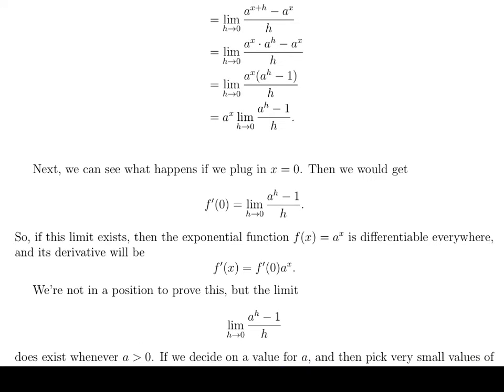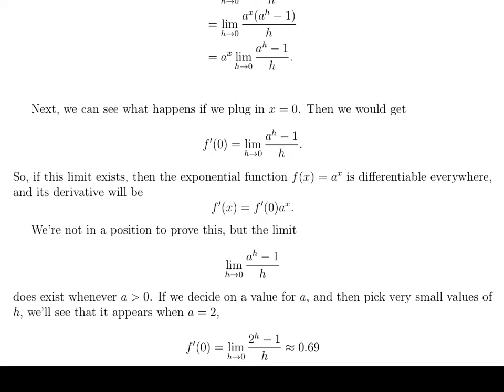Now we're actually not in a position to prove this, but this limit does actually exist whenever a is bigger than zero. And so let's go ahead and try to estimate the value of this limit for various values of a. So if we go ahead and pick, let's say, a equals two and plug that in so that now the limit looks like this. And we go ahead and pick very small values of h. It won't be that hard to convince yourself that the limit really does exist because the values are going to get close to something. And it turns out that the limit is going to be pretty close to .69, something like that.